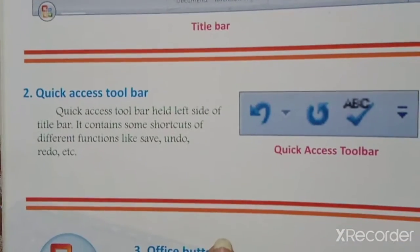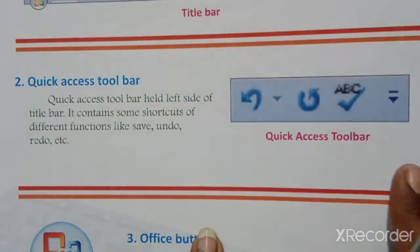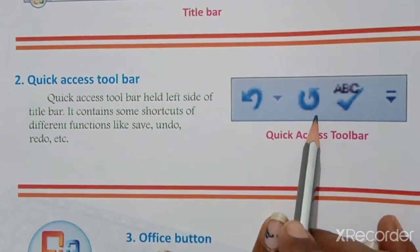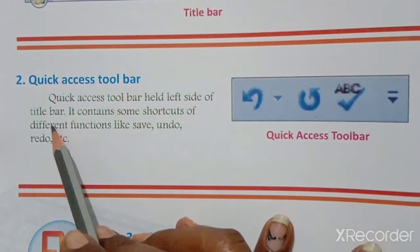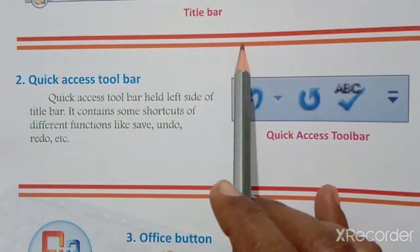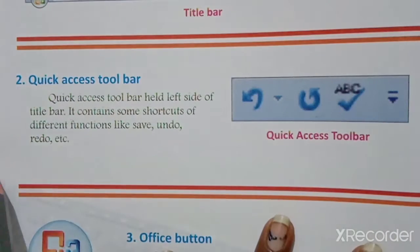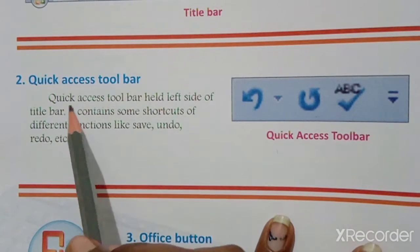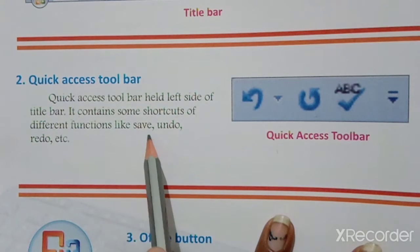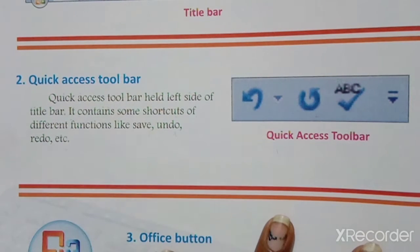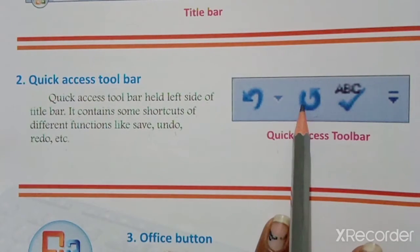Second is the Quick Access Toolbar. The Quick Access Toolbar is held on the left side of the Title Bar. It contains shortcuts for different functions like Save, Undo, and Redo, etc.